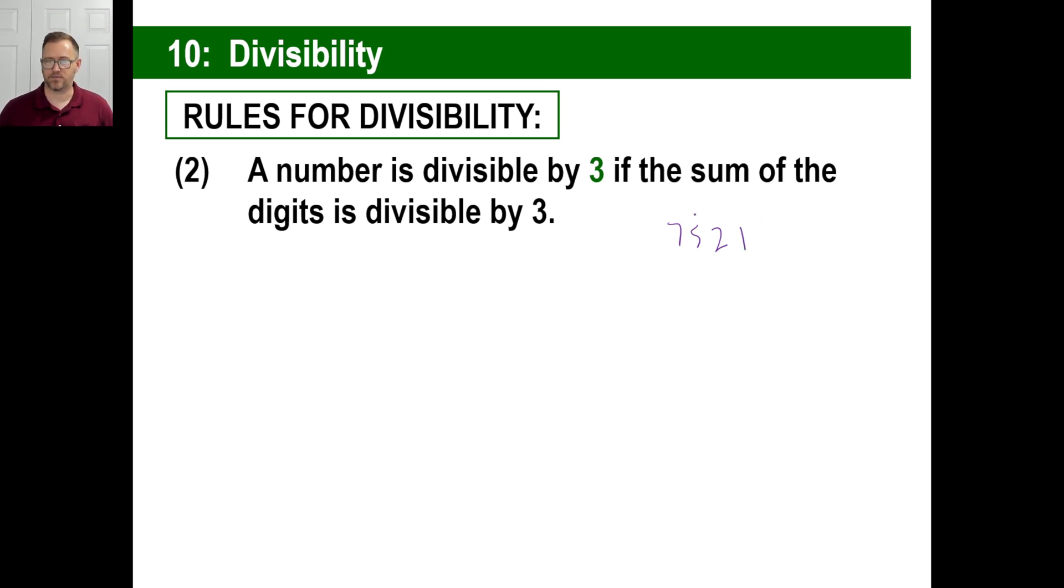You can look at that and go, okay, 7 plus 5, 12. 12 plus 2 is 14. 14 plus 1 is 15. So the digits in this number add up to 15. Is the number 15 divisible by 3? Yeah. So there you go. So you can actually, if you're not sure where to start, well, you can start with a 3 now and divide and you can knock down things. We're going to reduce fractions and do all kinds of things with this.